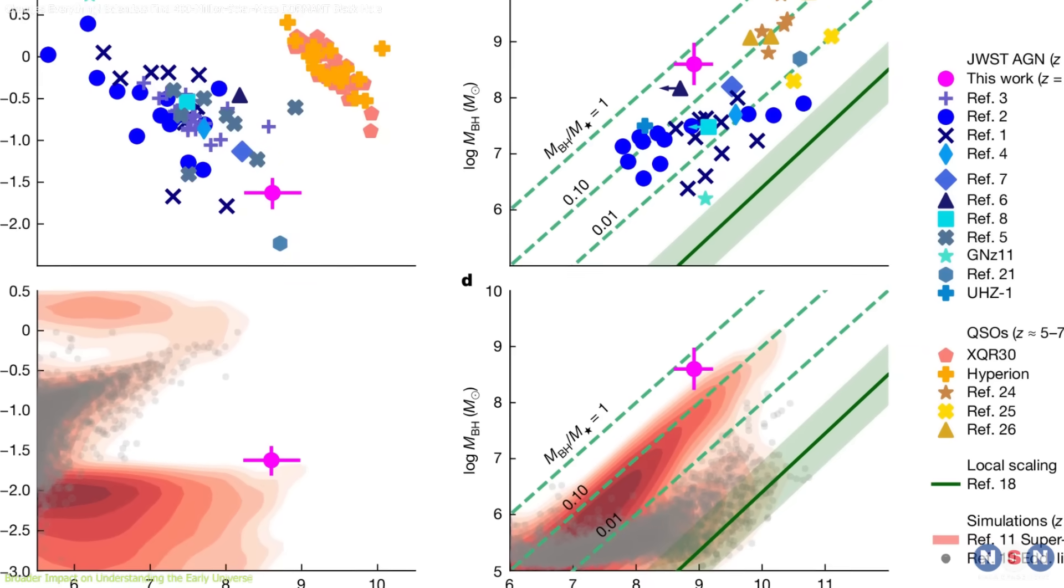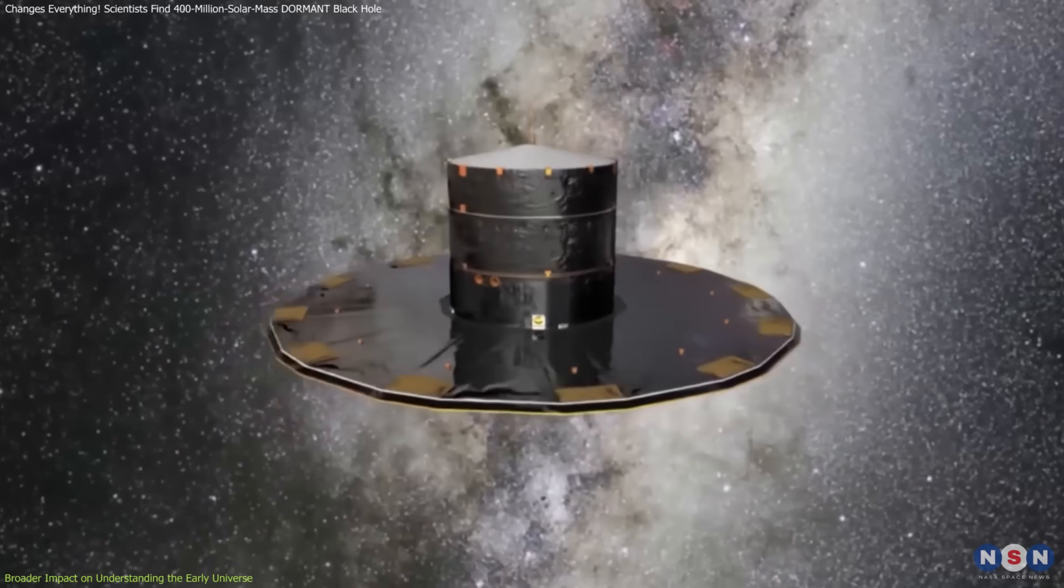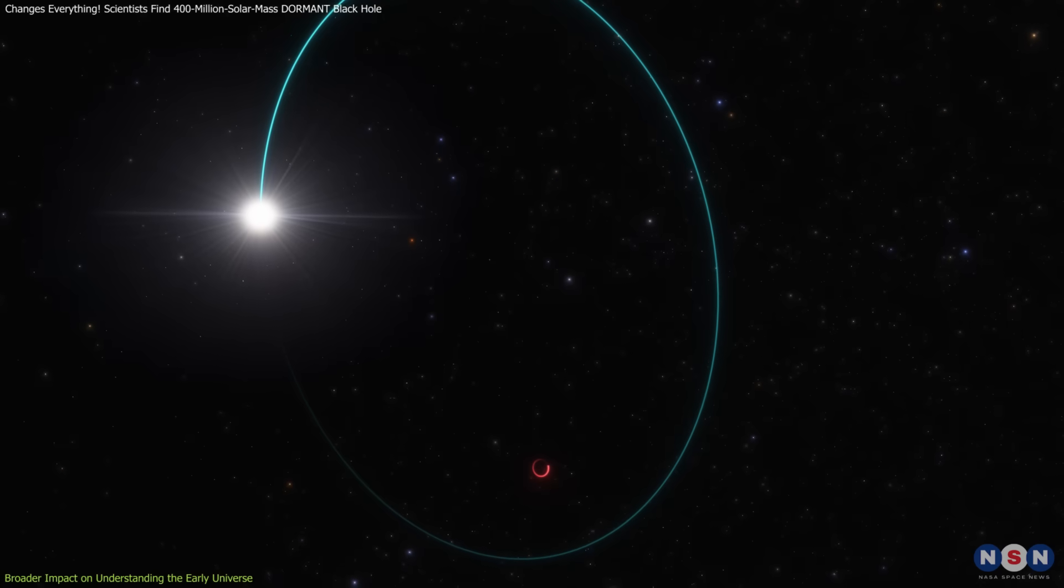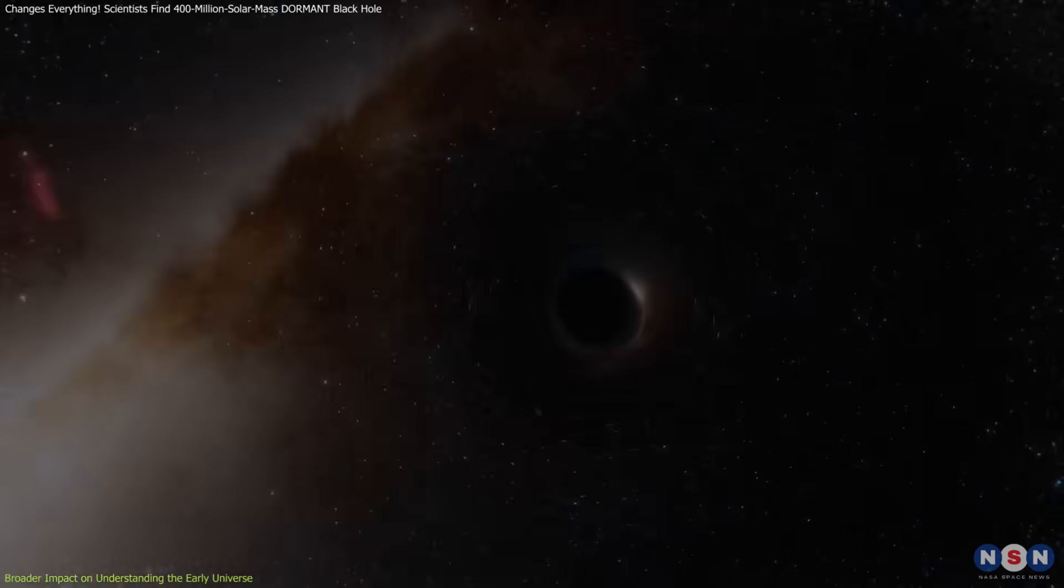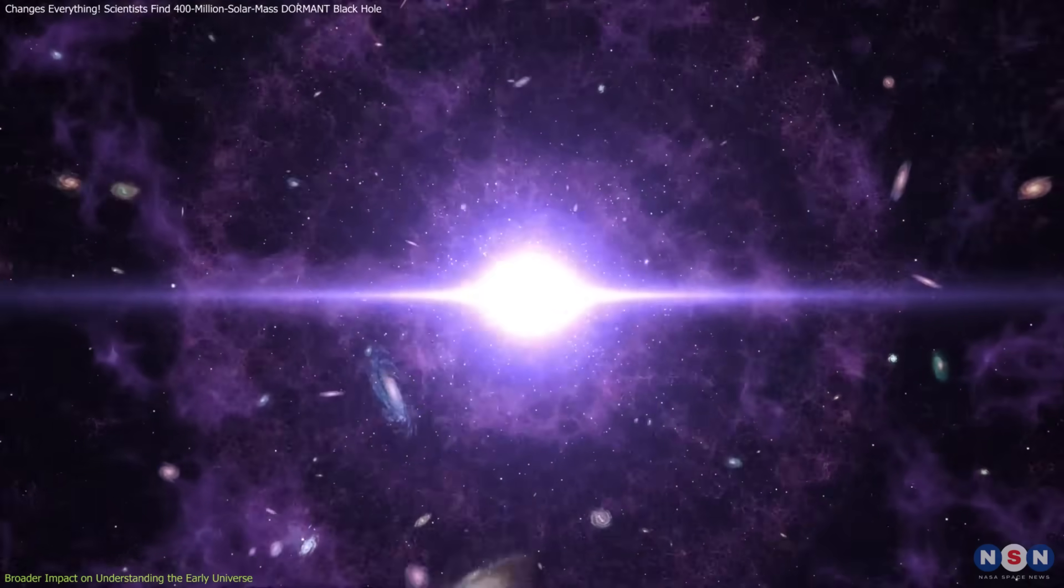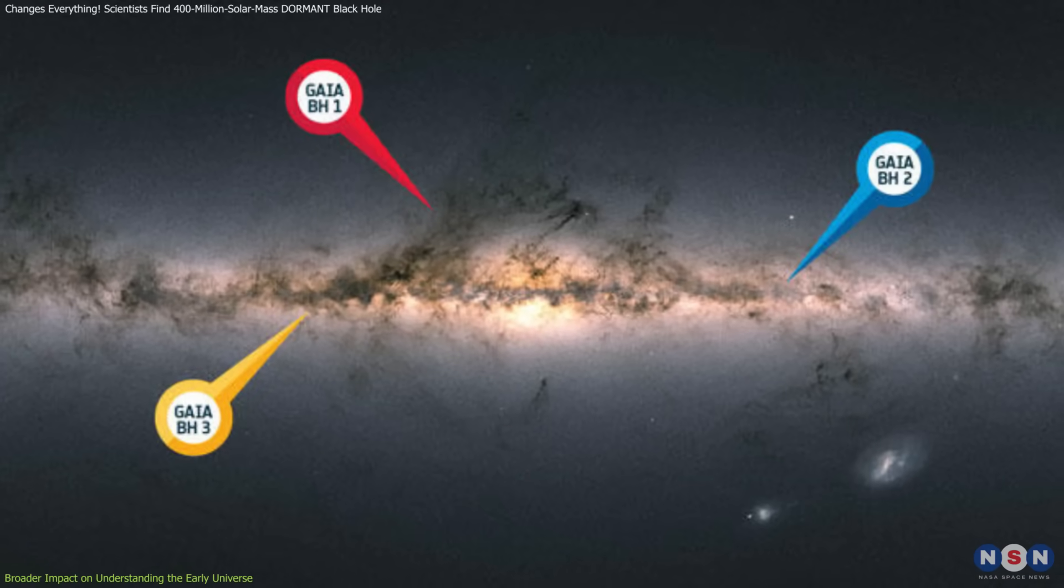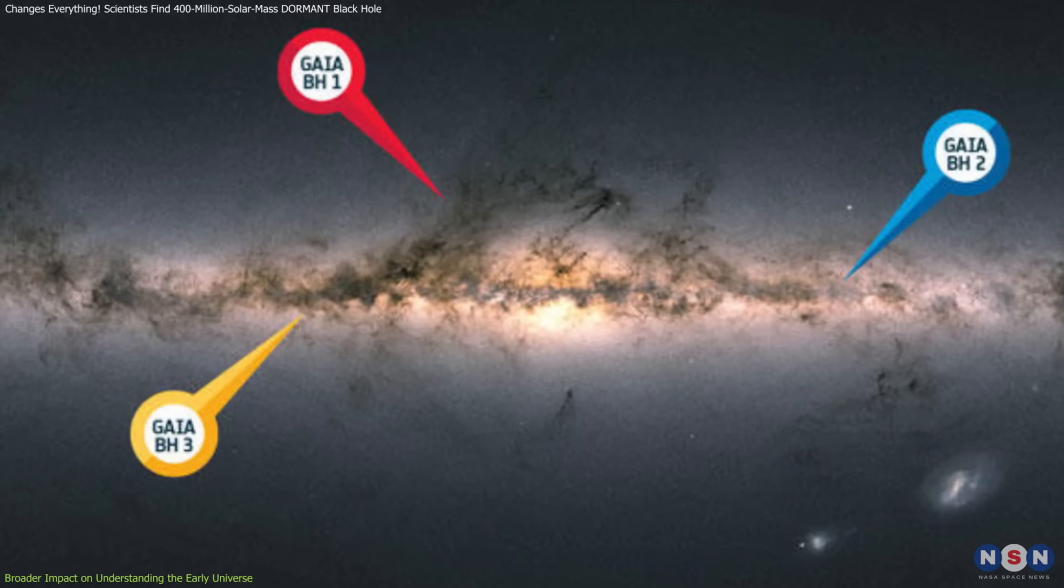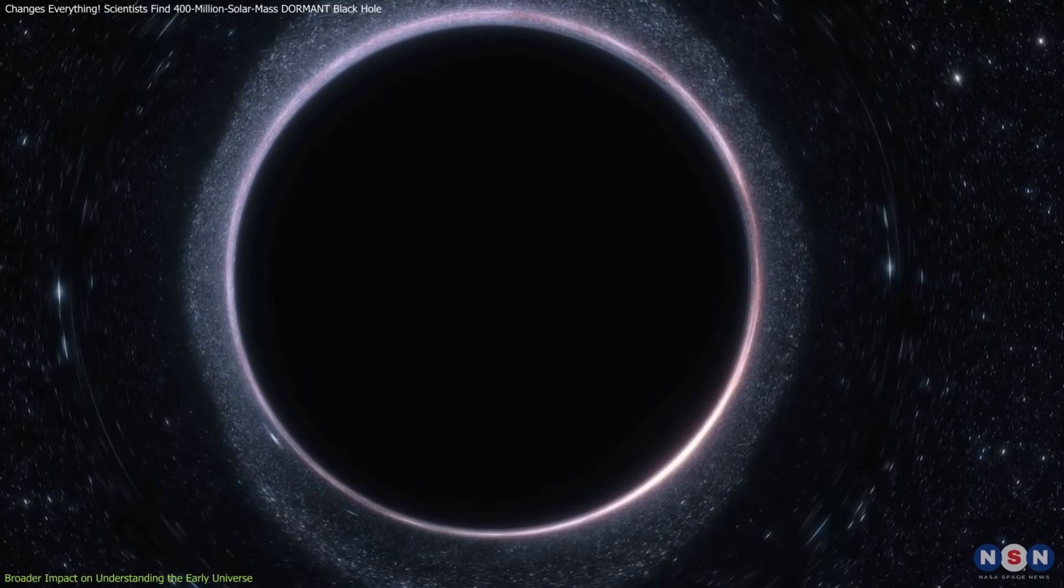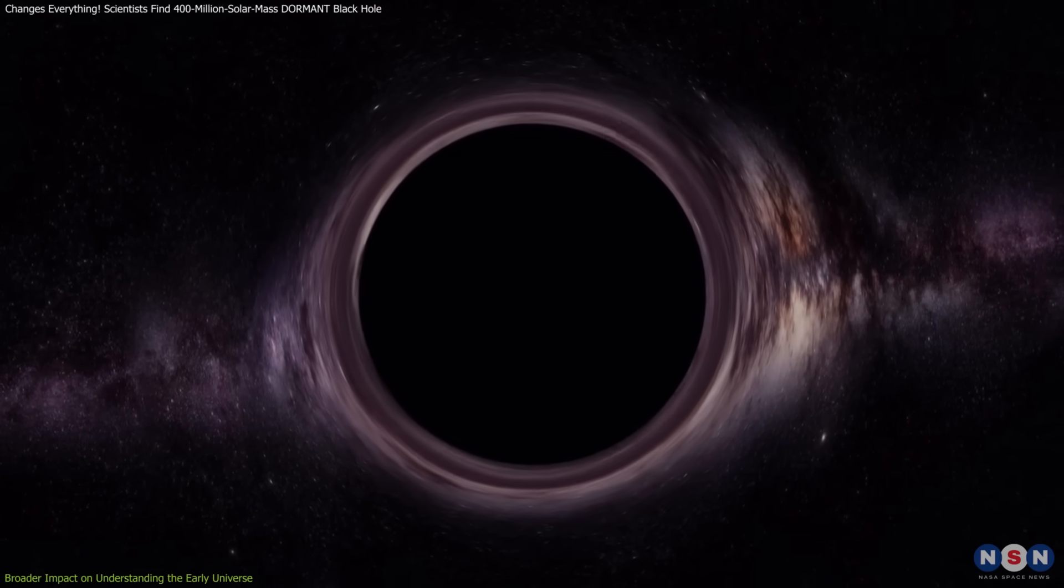While remarkable, this discovery isn't without precedent. In our own Milky Way, dormant stellar mass black holes like Gaia BH3 have been identified. Detected through the European Space Agency's Gaia mission, Gaia BH3, with a mass 33 times that of the Sun, is inactive and lacks a companion star for accretion, making it hard to detect. However, the early universe's dormant black hole is vastly more massive and existed when the universe was less than a billion years old. This contrasts sharply with Gaia BH3, which resides in a mature galaxy approximately 13.8 billion years post-Big Bang. The discovery challenges our understanding of how such massive black holes could form so quickly, prompting deeper exploration into their growth mechanisms and environmental factors.